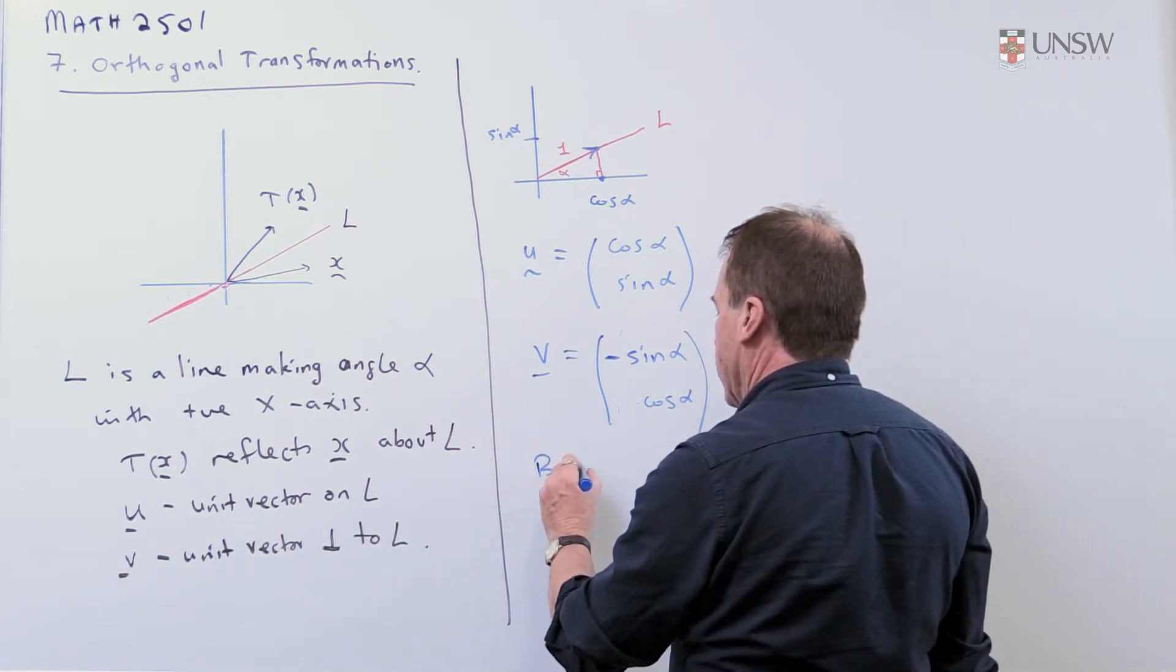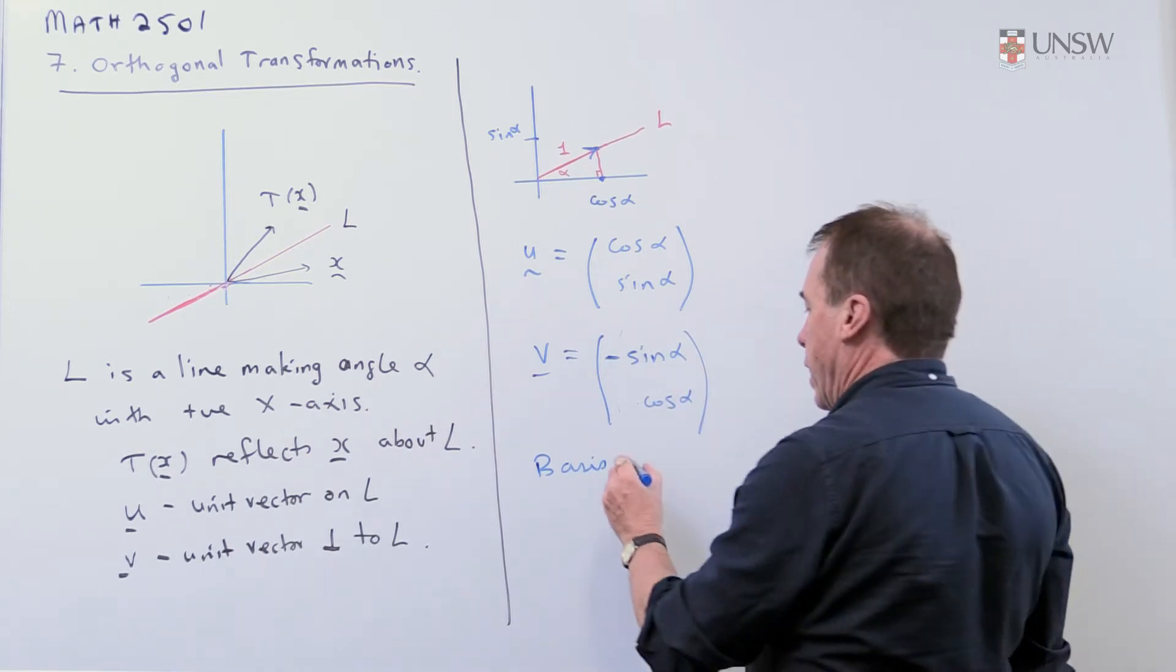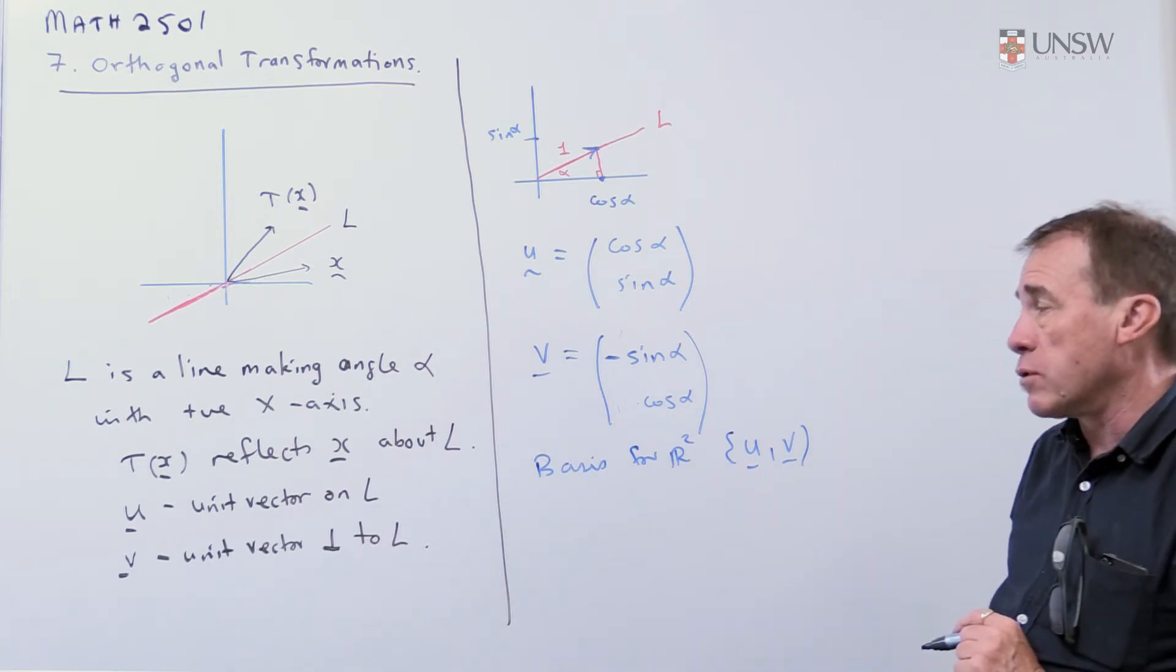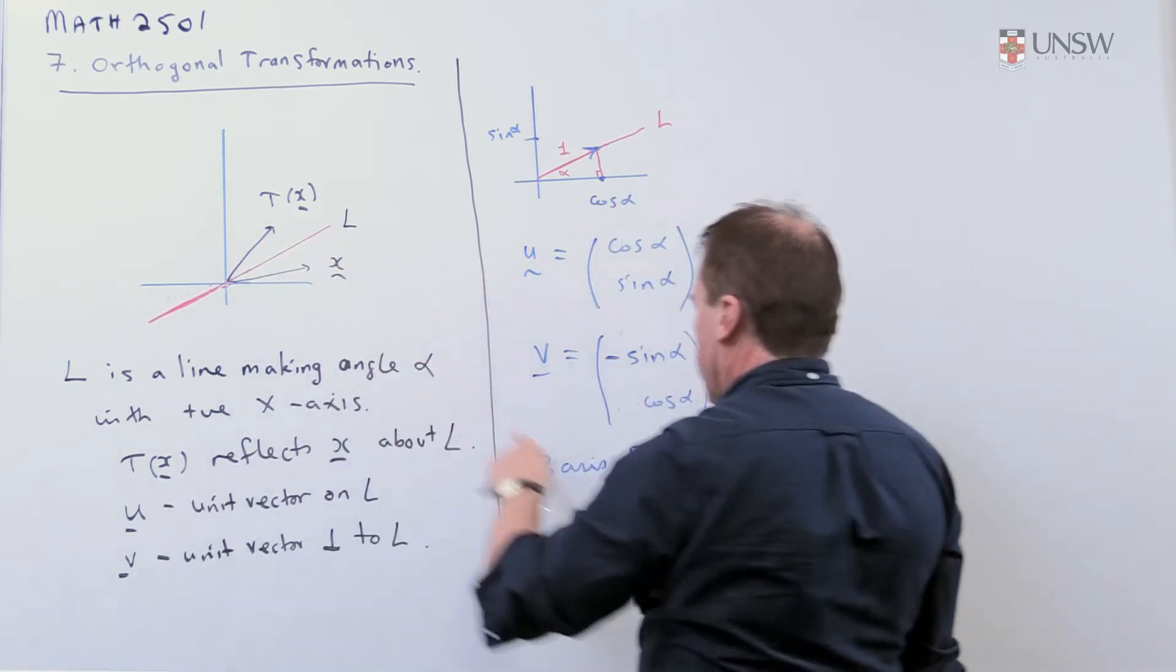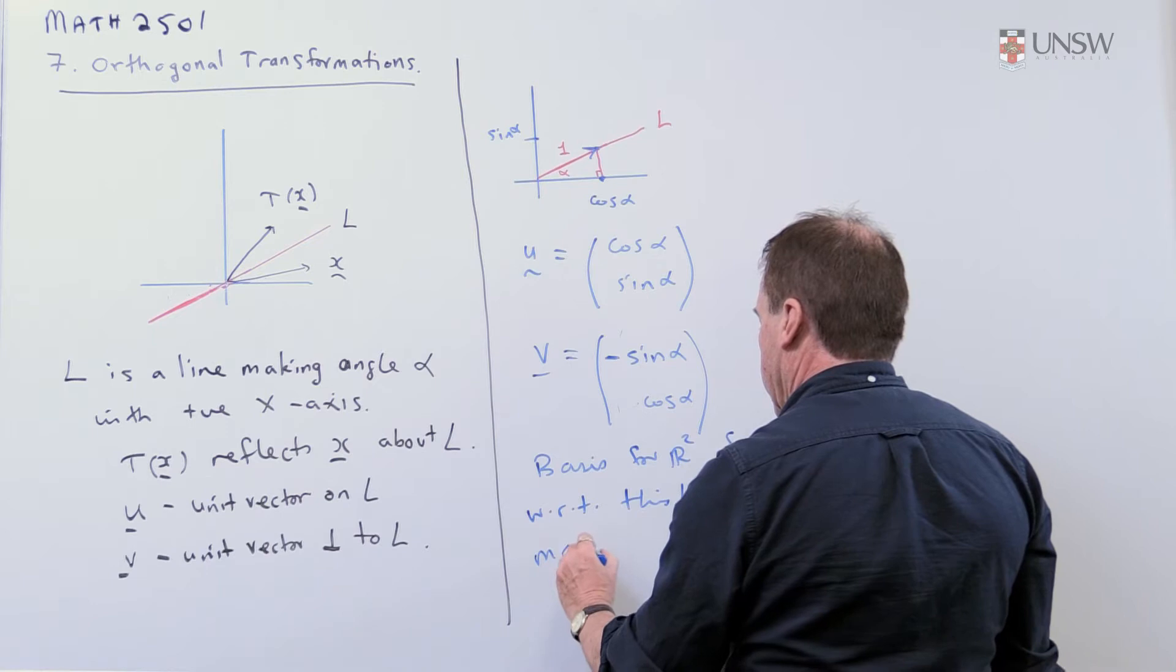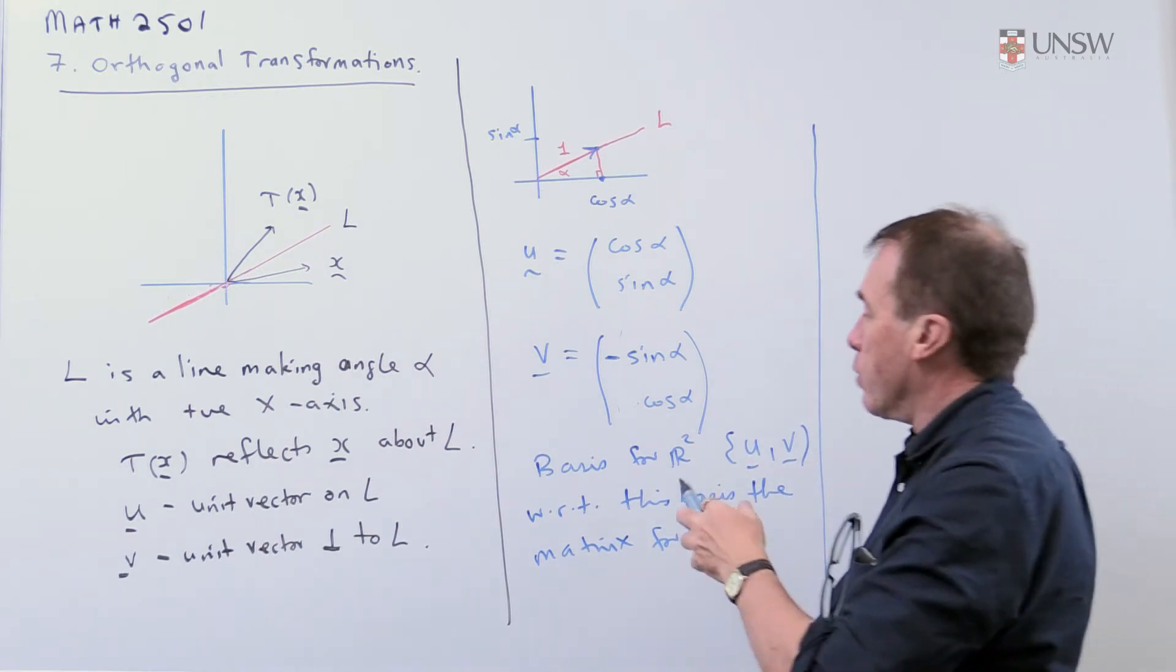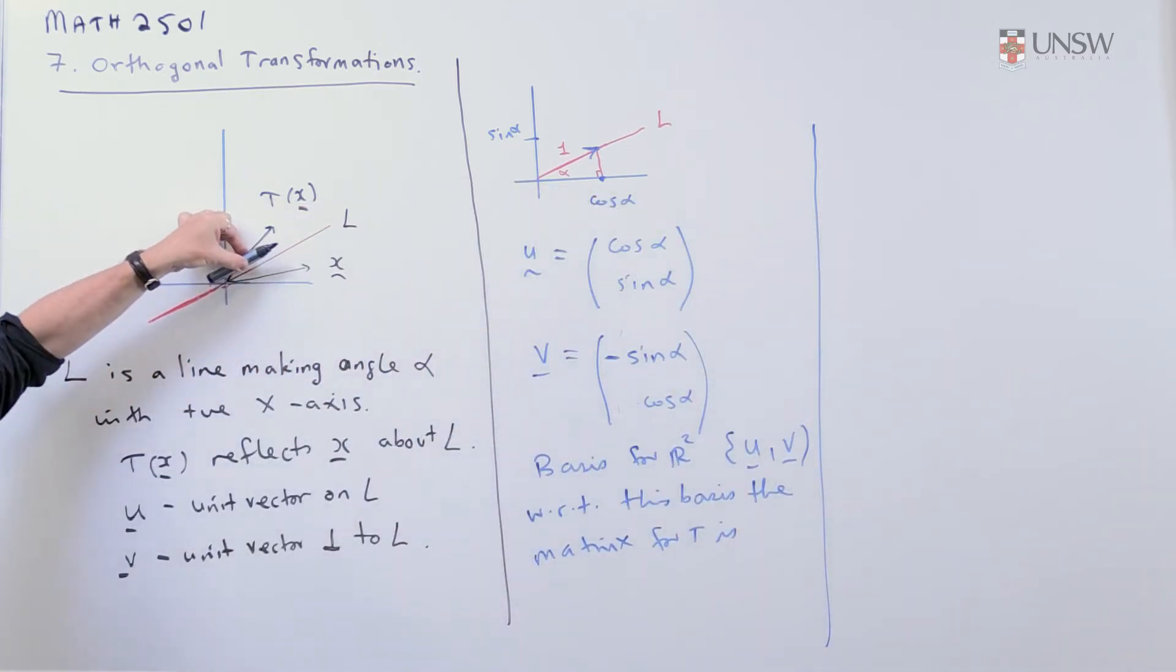So now I'm going to take a basis. These vectors are linearly independent and they're going to form a basis for r squared. So take a basis for R² to be u and v. I can then write down what the matrix representation for this linear map T is with respect to this basis. So with respect to this basis, the matrix for T is, well, we just use our common sense on this one. So what do I do? I need to take my basis vectors and I need to map them. Well, if I've got a vector that's lying on L and I reflect it about L, nothing happens.